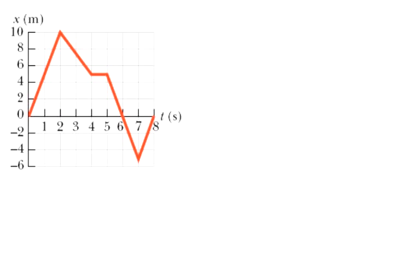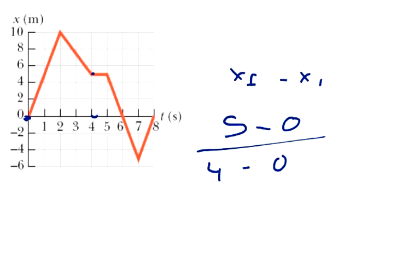The next one says from zero to four seconds, and I end right there — that's approximately five. So my x-final minus my x-initial is going to be approximately five minus zero. My time final is four seconds minus zero seconds. So five over four, which is 1.25 meters per second.